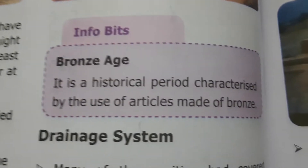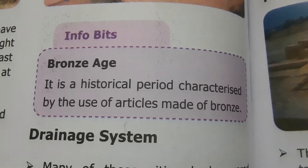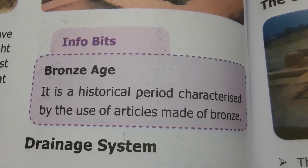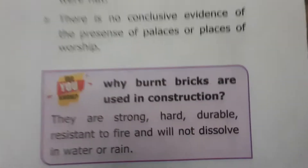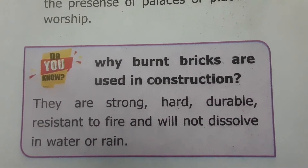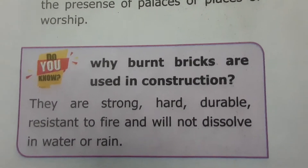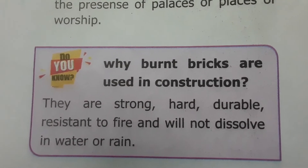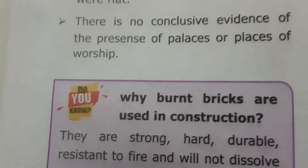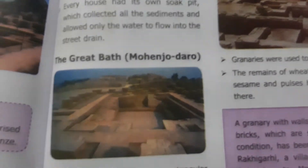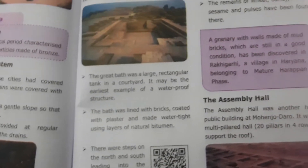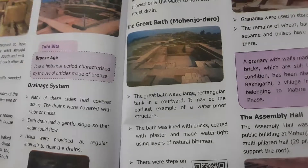The Bronze Age is a historical period characterized by the use of articles made from bronze metal. Burnt bricks are used in construction because they are strong, durable, resistant to fire, and will not dissolve in water during rain. The Great Bath at Mohenjo-daro was made waterproof. The great granary is situated in Harappa.